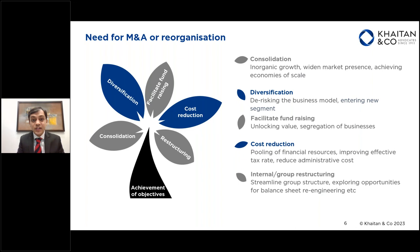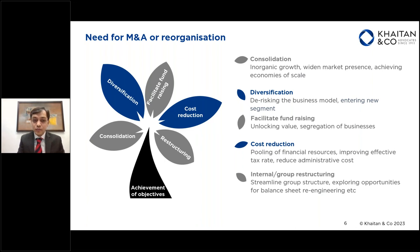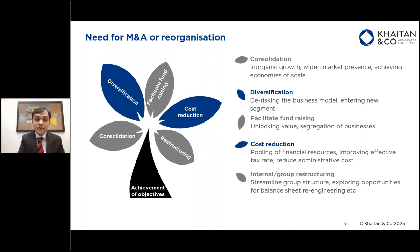Another reason corporates look at M&A is to facilitate fundraising or segregation of business. For example, one client actually demerged its institutional broking business from one entity into a separate entity with the intent to ultimately exit from that business — so an exit or fundraising can be achieved through a scheme of arrangement. Corporates also look at M&A to unlock value; for example, we have seen many precedents where listed entities do a demerger to segregate businesses and achieve two listed entities.